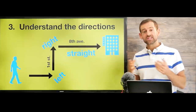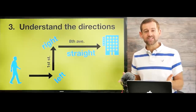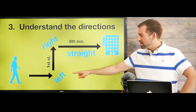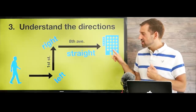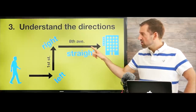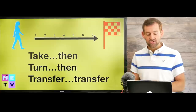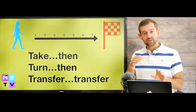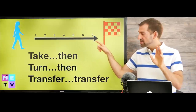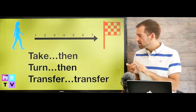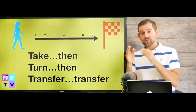The third step is to understand the directions — this is really important. If you don't understand the directions, it's just a waste of time. To understand directions, you need to know words like left, right, and straight. For example: "Turn left on 1st Street, then take a right on 8th Ave, then go straight until you see the hotel." The steps in directions always start with a verb like "take," "turn," or "transfer," followed by the word "then" to signal the next step.